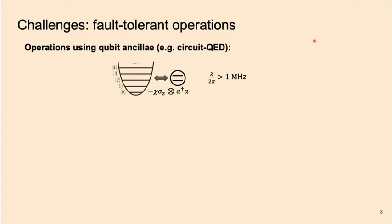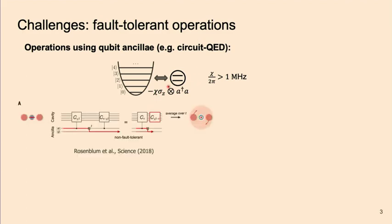A paradigmatic way of doing operations on these bosonic modes is to use a qubit ancilla. For instance, in the standard circuit QED platform, you can dispersively couple your cavity to a transmon, and then control this bosonic mode by driving this ancilla. However, the problem is that for this hybrid qubit-oscillator system, the ancilla tends to be very noisy, and ancilla errors tend to propagate back to the bosonic modes and compromise the encoded information. For instance, if you want to do a phase rotation on the bosonic mode conditioned on the qubit state, and if the qubit decays in the middle, you will have a large random phase rotation on your bosonic mode, which will destroy the information there.